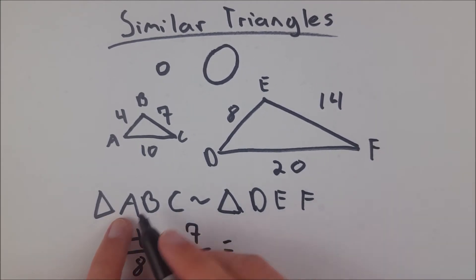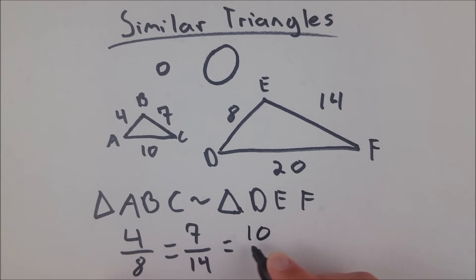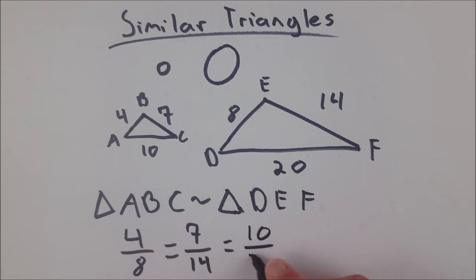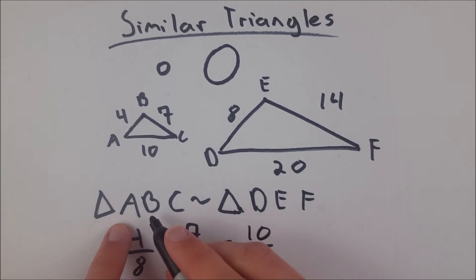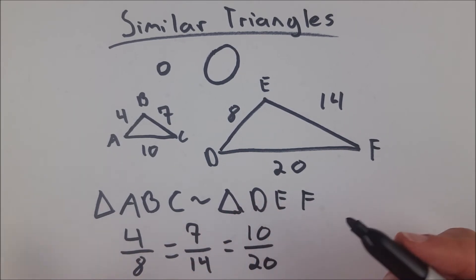And then the last side is side AC, which corresponds to side DF. Here's AC, that's 10, and then DF is 20. So, if you pick the first two letters of this triangle, and you're looking at that side, the corresponding side is defined by the first two letters of the other triangle's name.